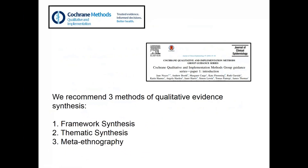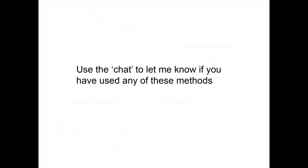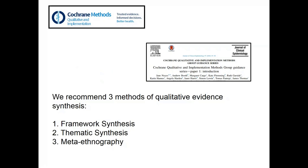In the qualitative and implementation methods group in Cochrane, we recommend three methods of qualitative evidence synthesis and I'm going to show you some worked examples of each. We recommend framework synthesis, thematic synthesis and metaethnography. The reason why we recommend these three methods is because we've selected methods in which you can use the findings in a specific way, and I'll explain what I mean by that in a few seconds.